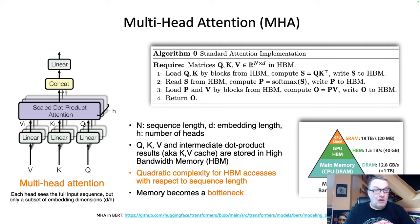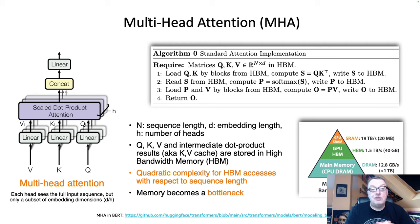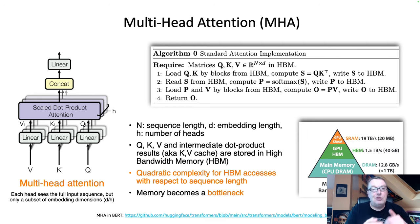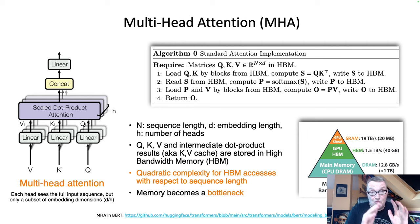If you want to look at the implementation for multi-head attention, I've referenced the file in the transformers library — the code for BERT. Believe it or not, it's actually rather straightforward to read. You can clearly see that algorithm implemented in the code: Q, K, and V being multiplied and in action. So if you're curious how this is actually implemented, I encourage you to go and check out the BERT implementation.